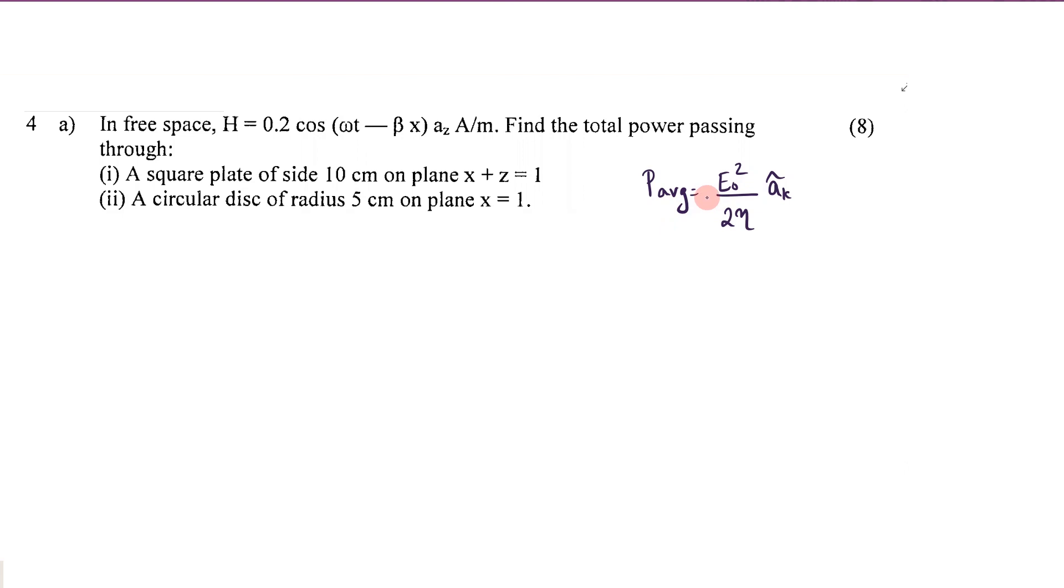This is the equation for average power, E0 square divided by 2 eta, where eta is intrinsic impedance and E0 is the amplitude of electric field intensity. But here they have given H, not E.